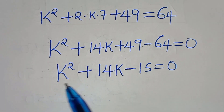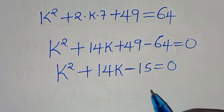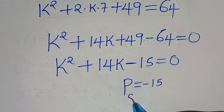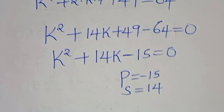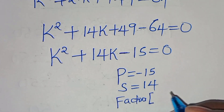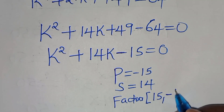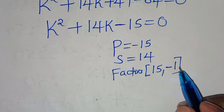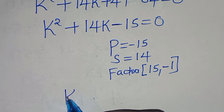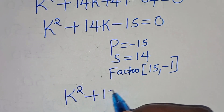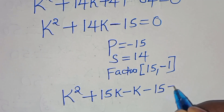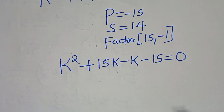This is a quadratic equation. We solve it by factorization, where the product of the two factors equals -15 and their sum equals 14. The two factors are 15 and -1, since 15 × (-1) = -15 and 15 + (-1) = 14. So we write k² + 15k - k - 15 = 0.